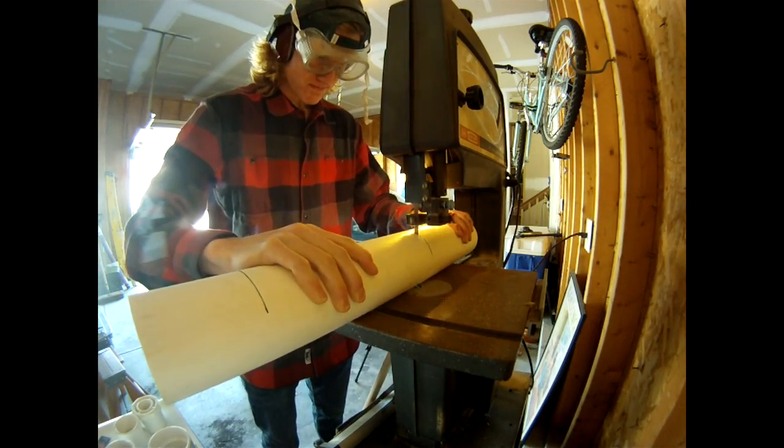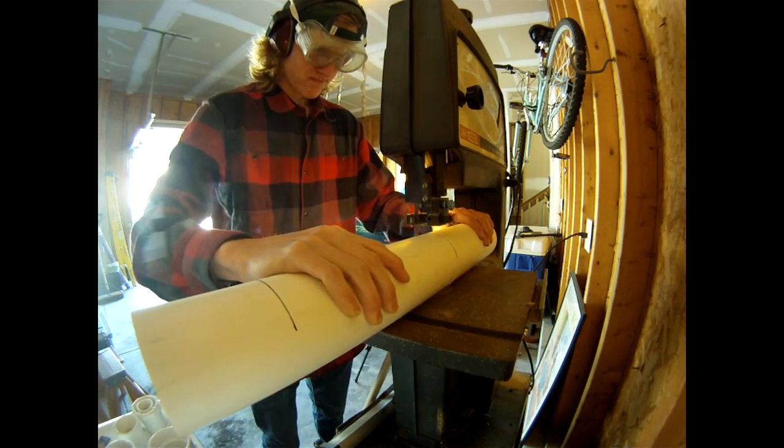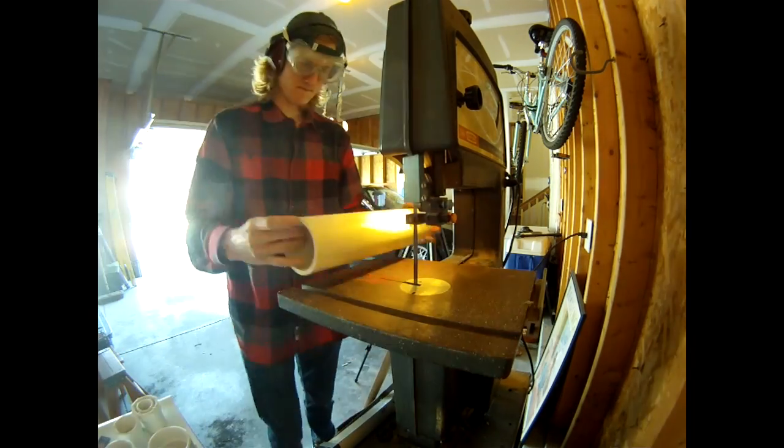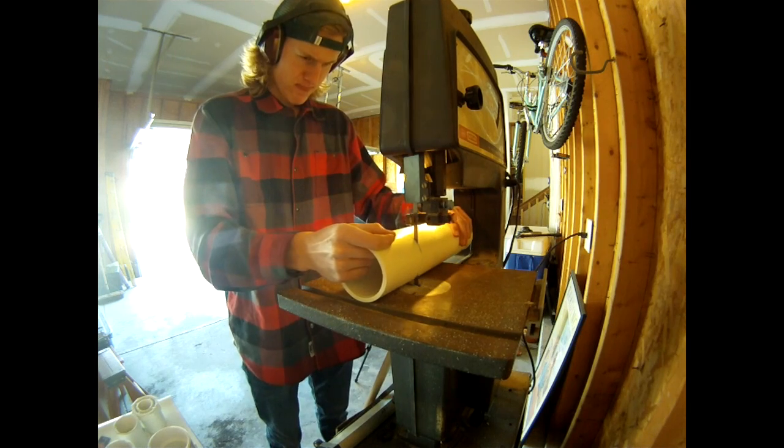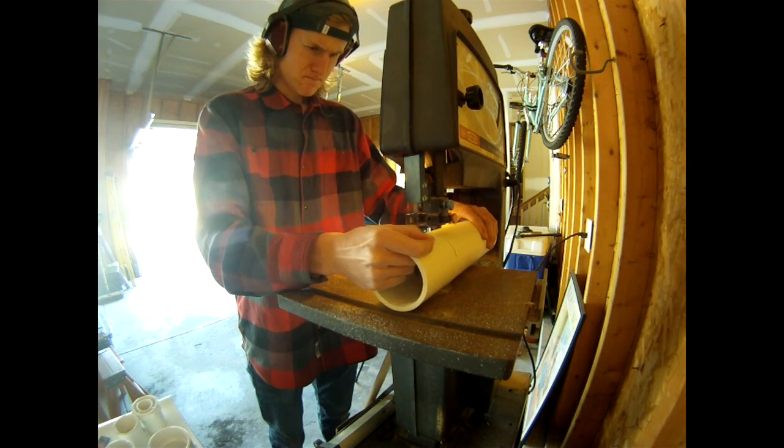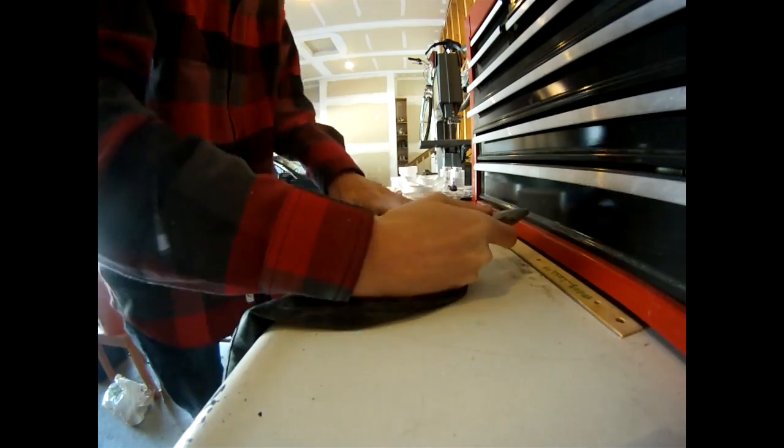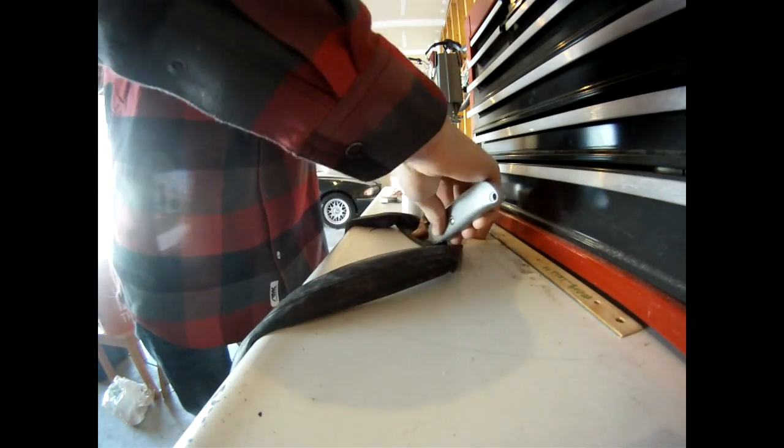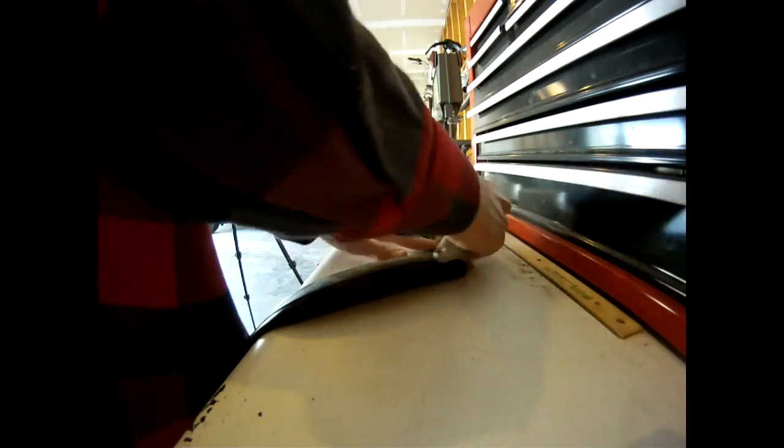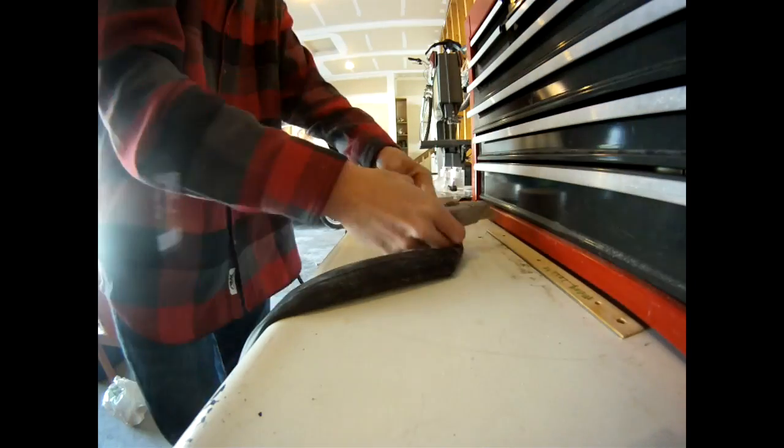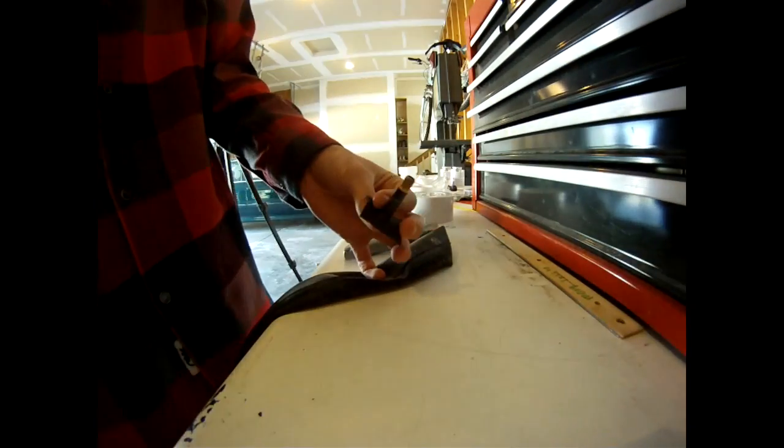We're going to cut the PVC pipe into two 9 inch segments, which will serve as our air reservoir. There will be some left over. Next, we're going to cut the valve off the old bike tire. This is how we'll fill up the reservoir with just a simple bike pump.